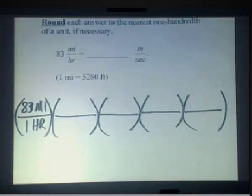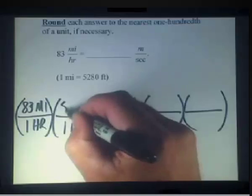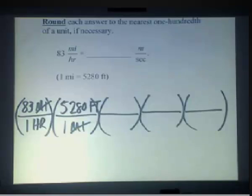First thing we want to do is get this in terms of feet. So we know that in one mile, we have 5,280 feet. So that will then get our miles to cancel.